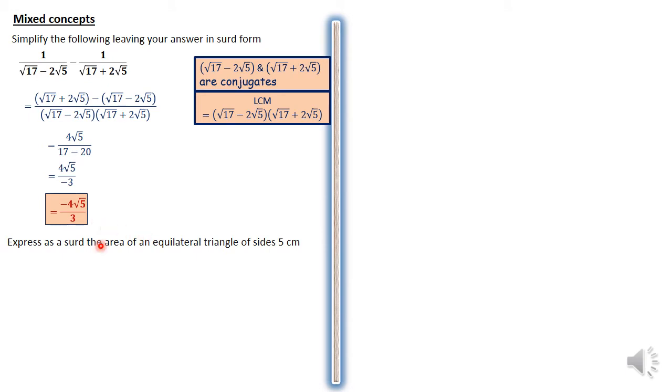Another question. We are told, express as a surd the area of an equilateral triangle whose side is 5 cm. We know that if this is an equilateral triangle, all sides are equal. In our case, they are equal to 5. We have this side is 5, this side is 5.